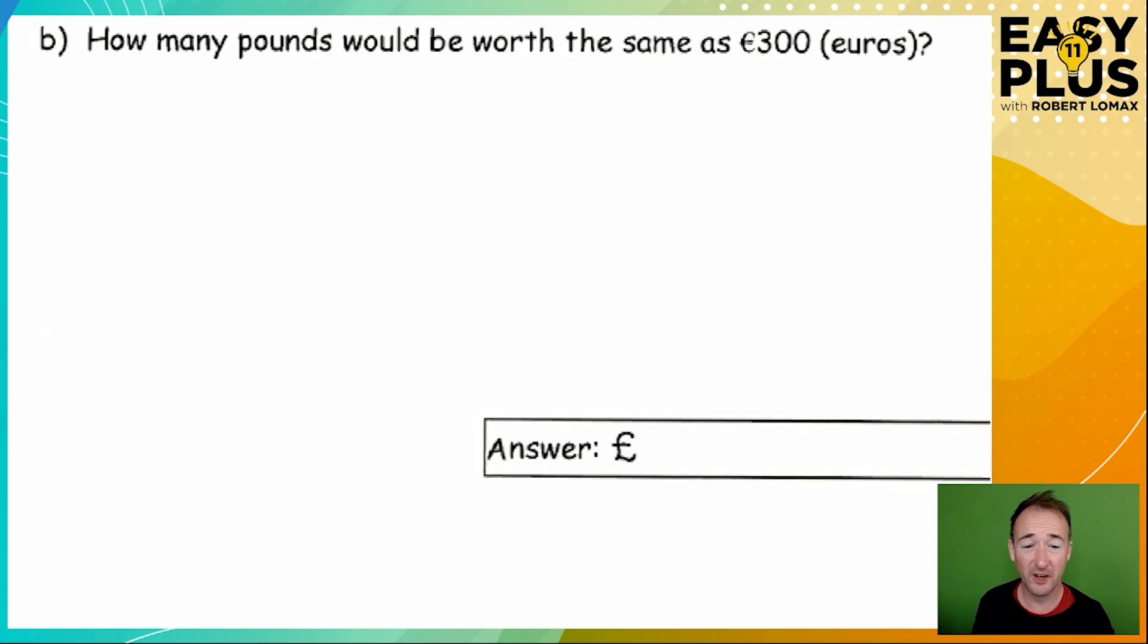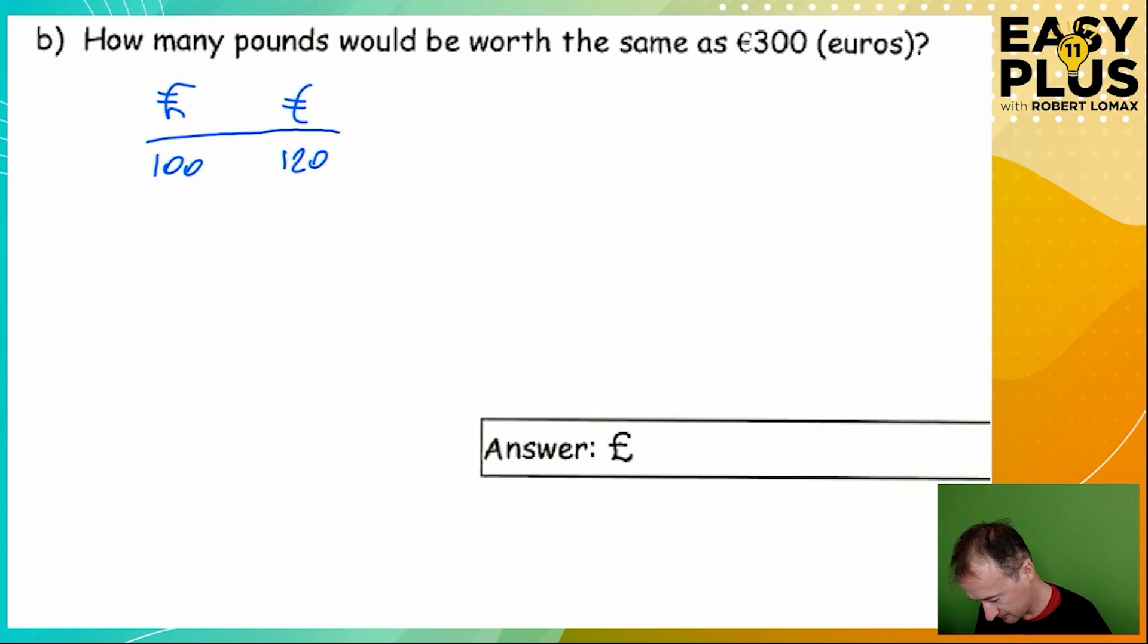Let's take the same starting approach for this one and set up a table. And once again, we know that £100 is equivalent to €120. It may not be entirely obvious how to get from €120 to €300 so let's start by simplifying this a bit.